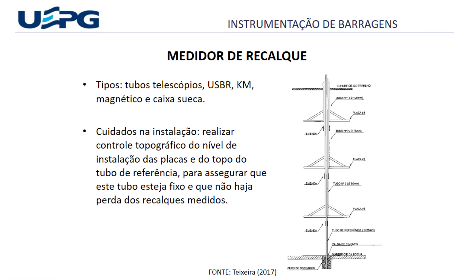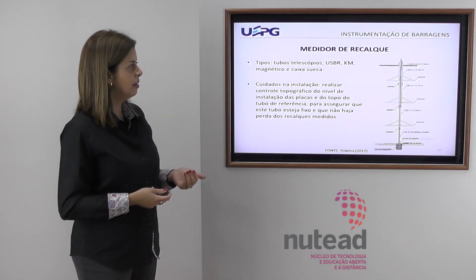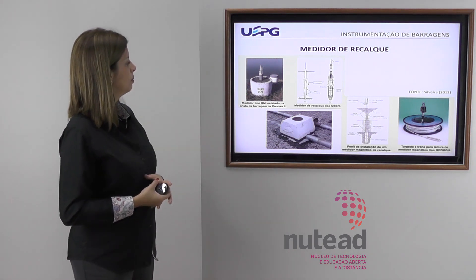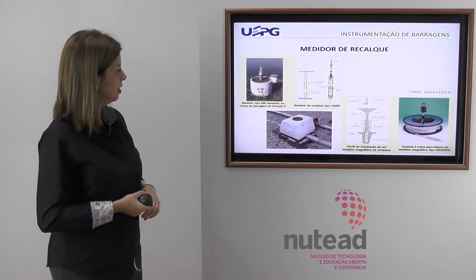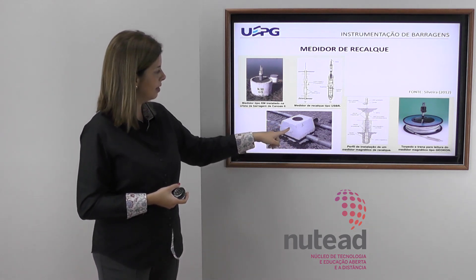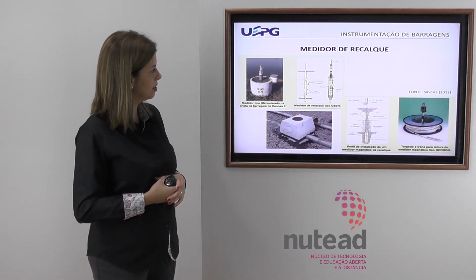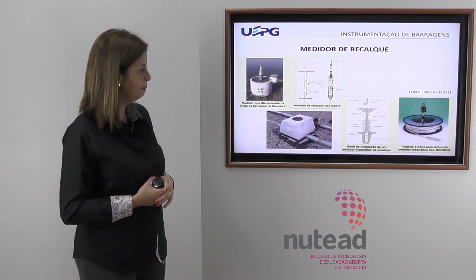As caixas suecas são instaladas no sentido horizontal. É necessário ter cuidado na instalação, realizar controle topográfico do nível de instalação das placas e do topo do tubo de referência, para garantir que o tubo esteja fixo e não haja perda dos recalques medidos. Aqui um exemplo de medidor tipo KM instalado na crista de uma barragem. As caixas suecas não são instaladas em furos de sondagem — são horizontais e têm um princípio de vasos comunicantes para ver a deformação.